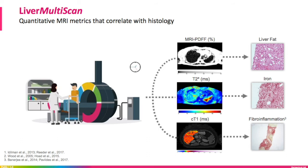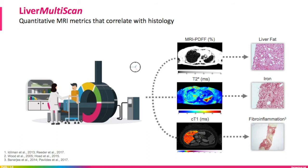The three metrics provided by Liver Multi-Scan are PDFF, T2 star, and cT1 — or simply put, fat percentage, iron content, and fibroinflammatory activity. I would point out that our fibroinflammatory metric is a proprietary and patented metric specific to Perspectum. All three metrics have been shown to correlate with fat, iron, fibrosis, and inflammation in liver biopsy in multiple published papers and research clinical trials.